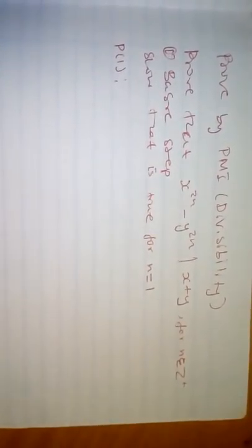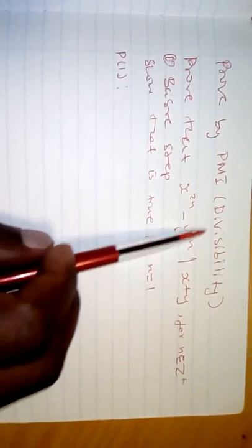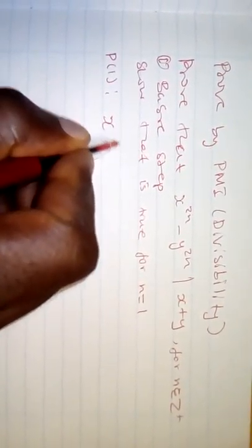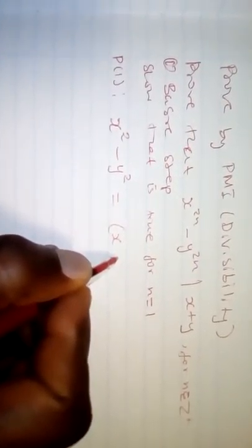We want to show that this is true for n equals 1. We need to check whether the expression is divisible by x plus y. We substitute n equals 1, giving us x squared minus y squared, which is a difference of two squares and factors as x minus y times x plus y.